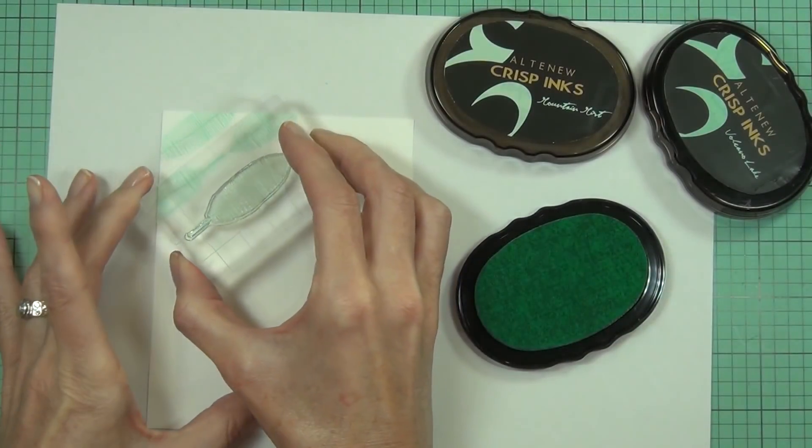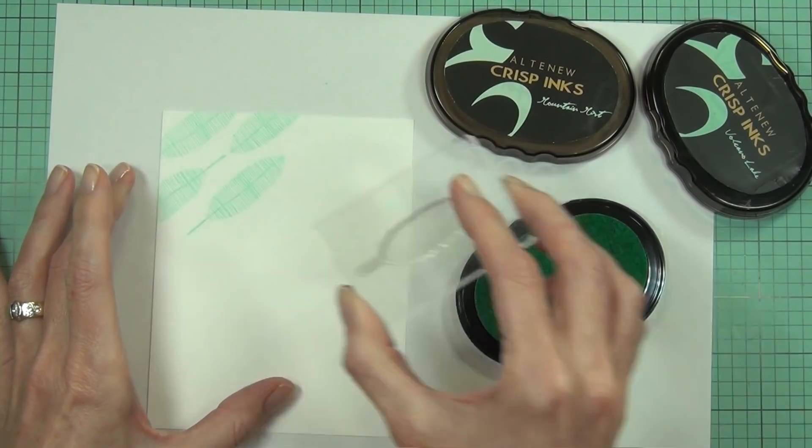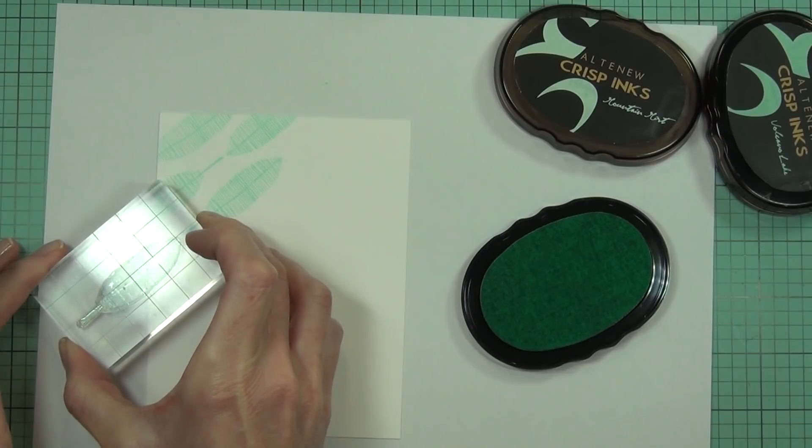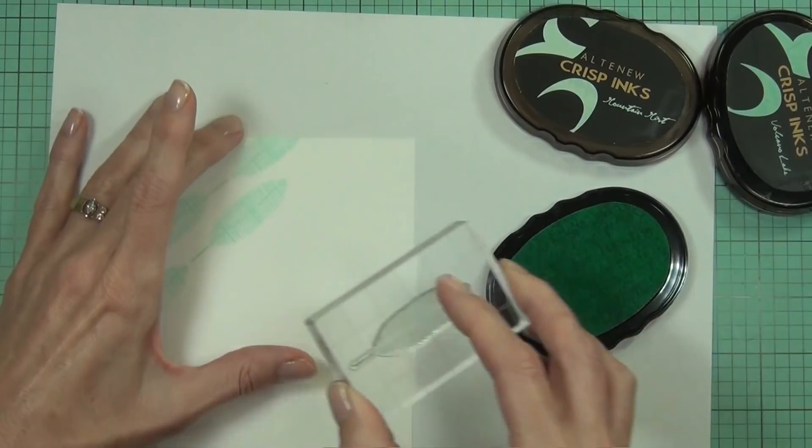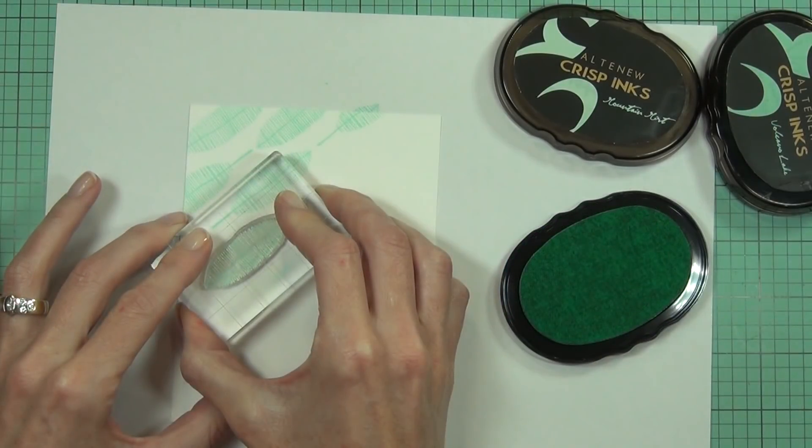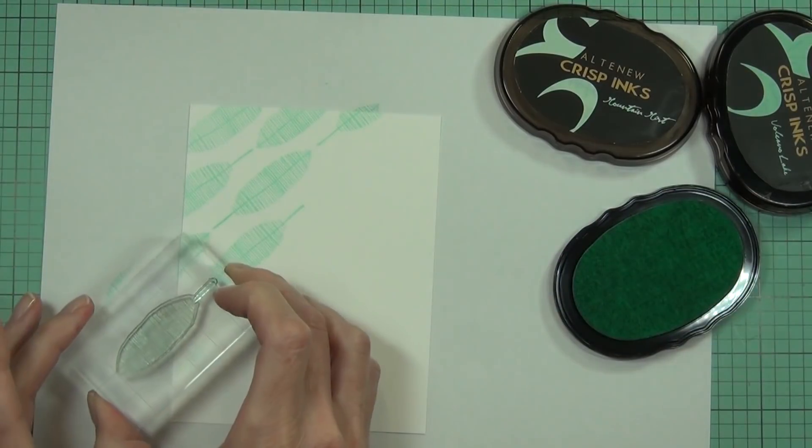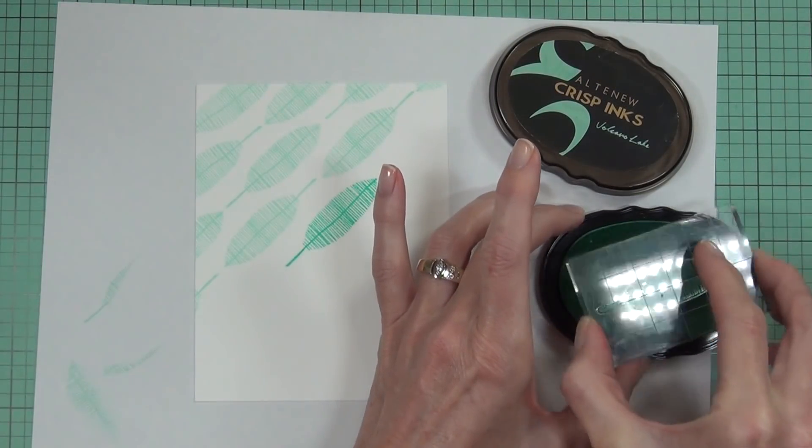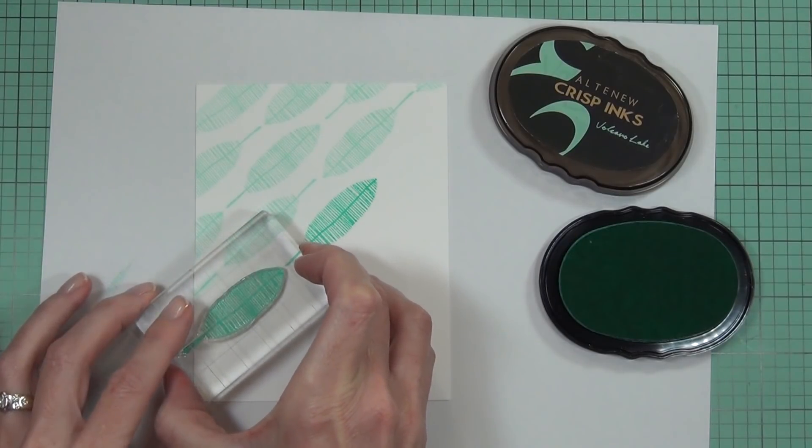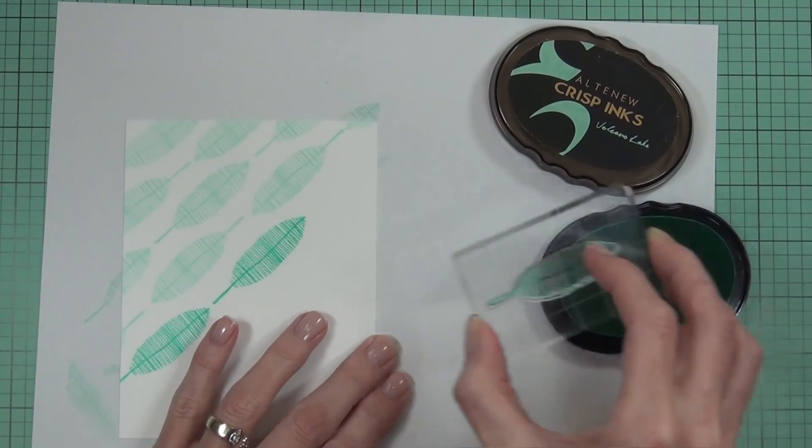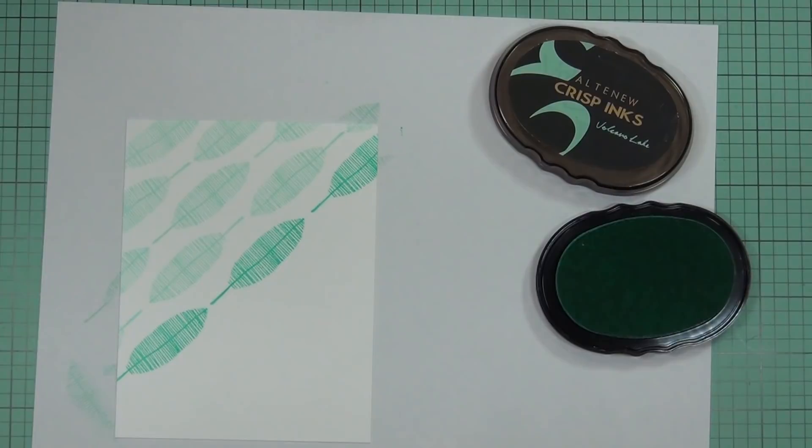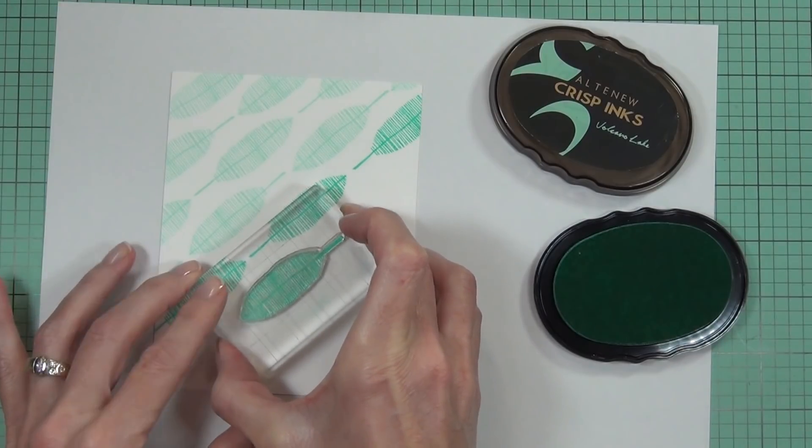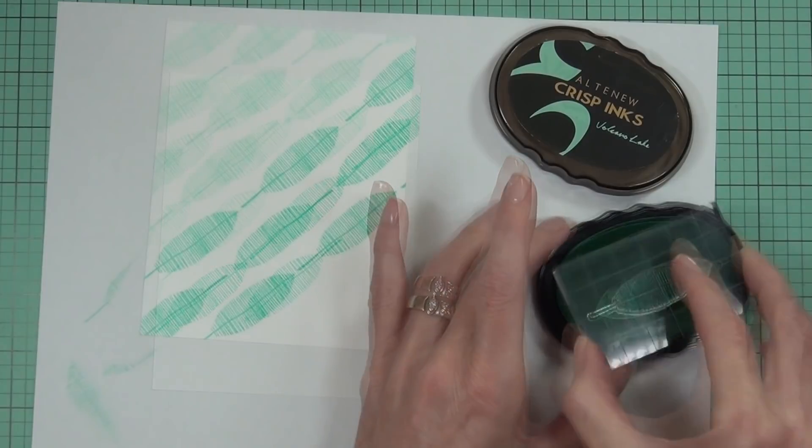I decided to stamp out my own background using Altenew inks. This is the Mountain Mist color, the lighter one, and I'm rotating this beautiful leaf image. It's from a set called Rustic Botanicals created by Julie Ebersole. Once I've finished stamping the first color, the second one I'm using is Volcano Lake. I've flipped the leaf around and focused all the lighter ink on one side of the card and the darker on the other, creating that ombre effect.